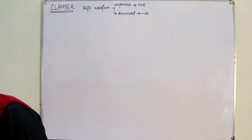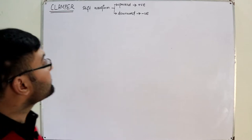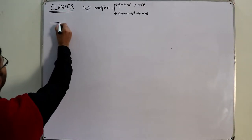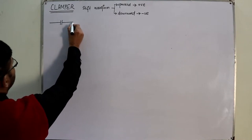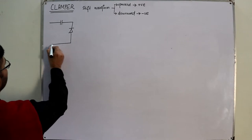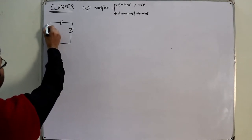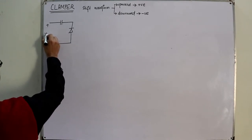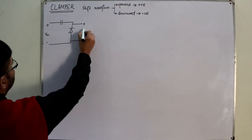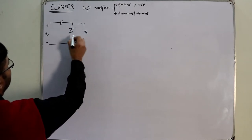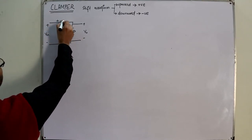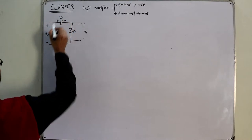Today we see the positive clamper. Let me draw the circuit directly. The diode is in this fashion. Plus-minus input voltage. The output is over here, plus-minus output voltage. Ideal diode D, plus connected over here, so plus-minus VC as well.